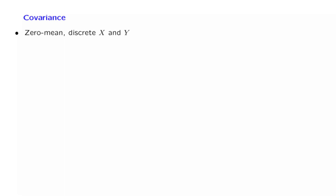Suppose that x and y have zero means and that they are discrete random variables. If x and y are independent, then the expectation of the product is the product of the expectations. And since we have assumed zero means, this is going to be equal to zero.